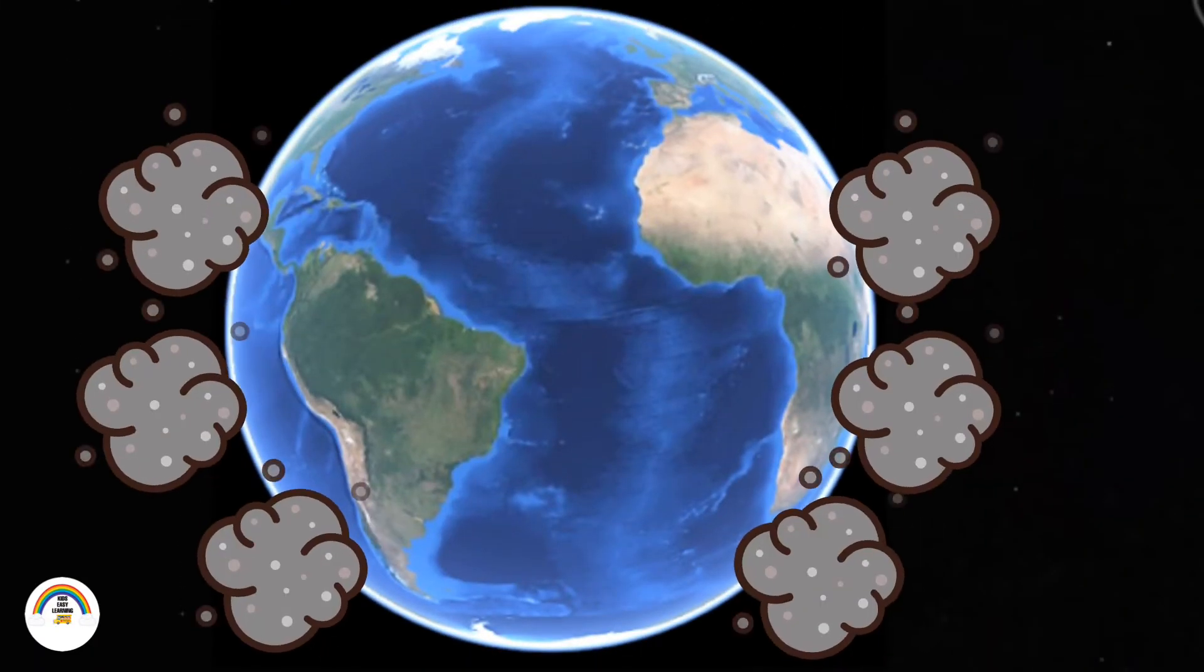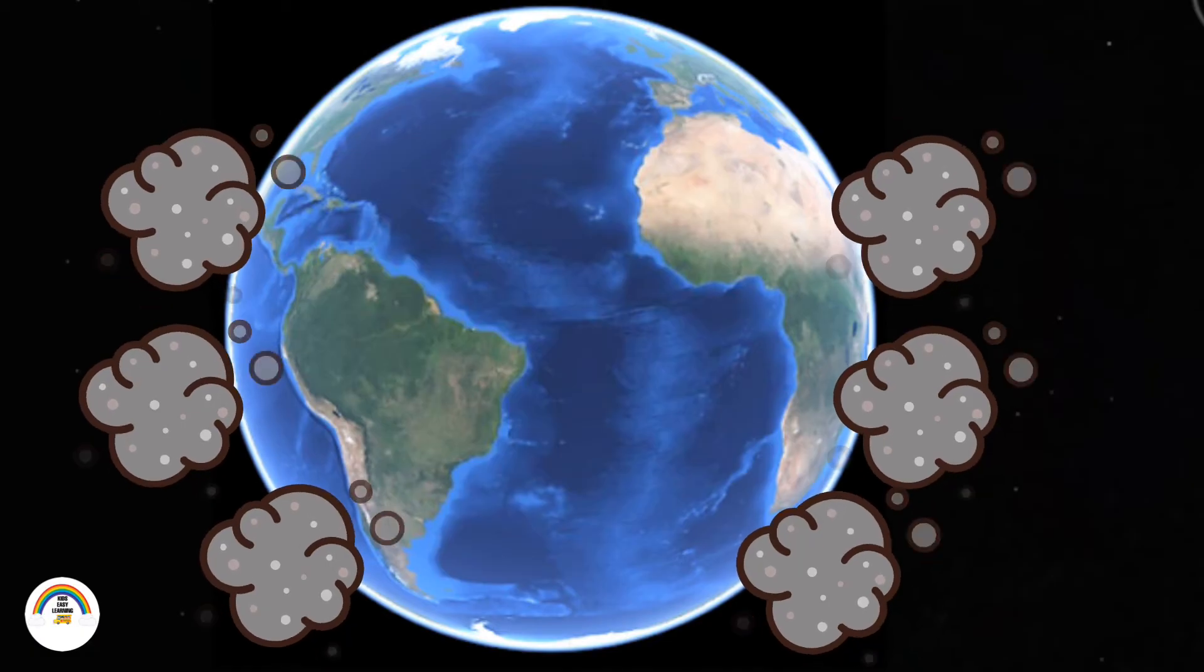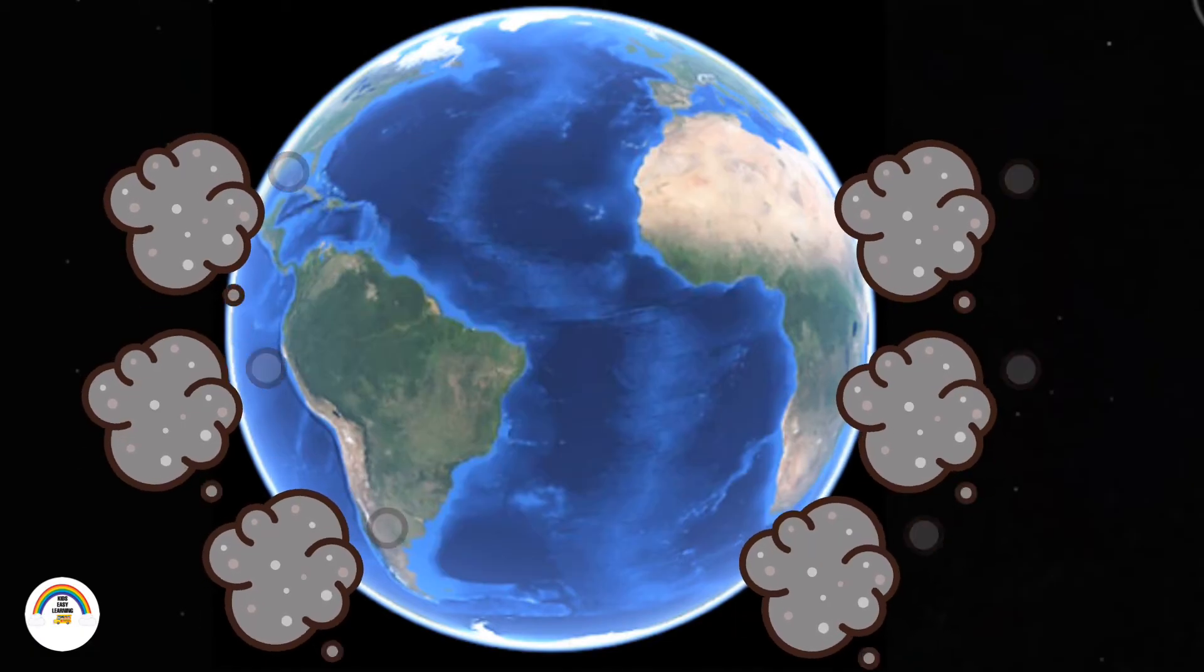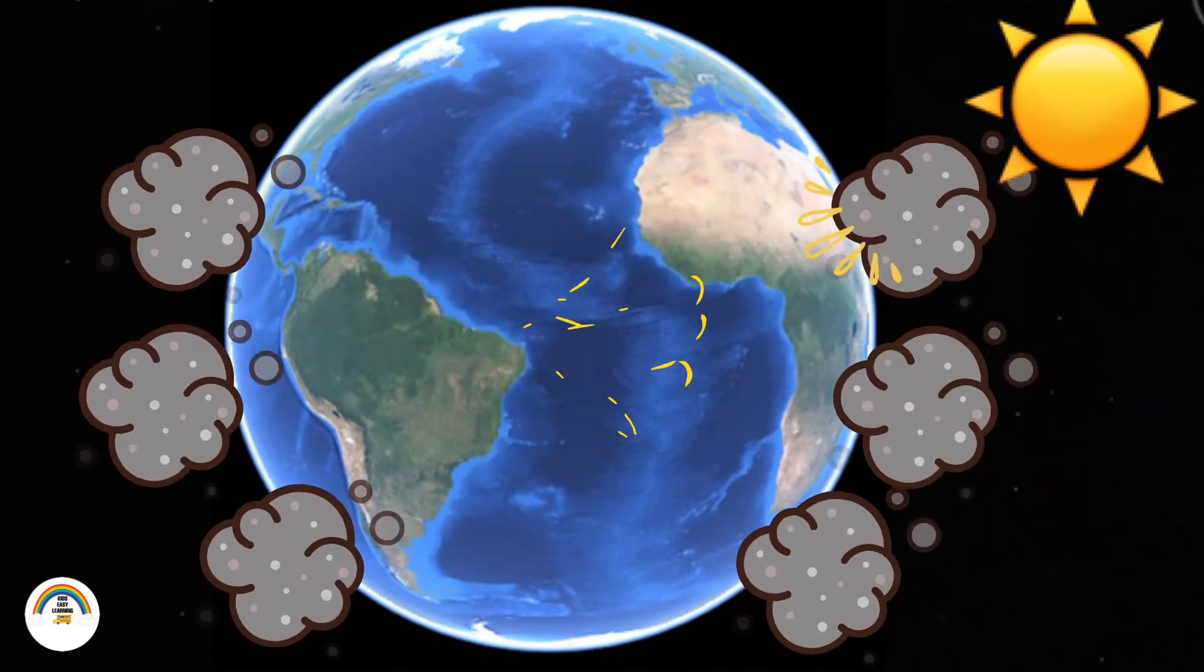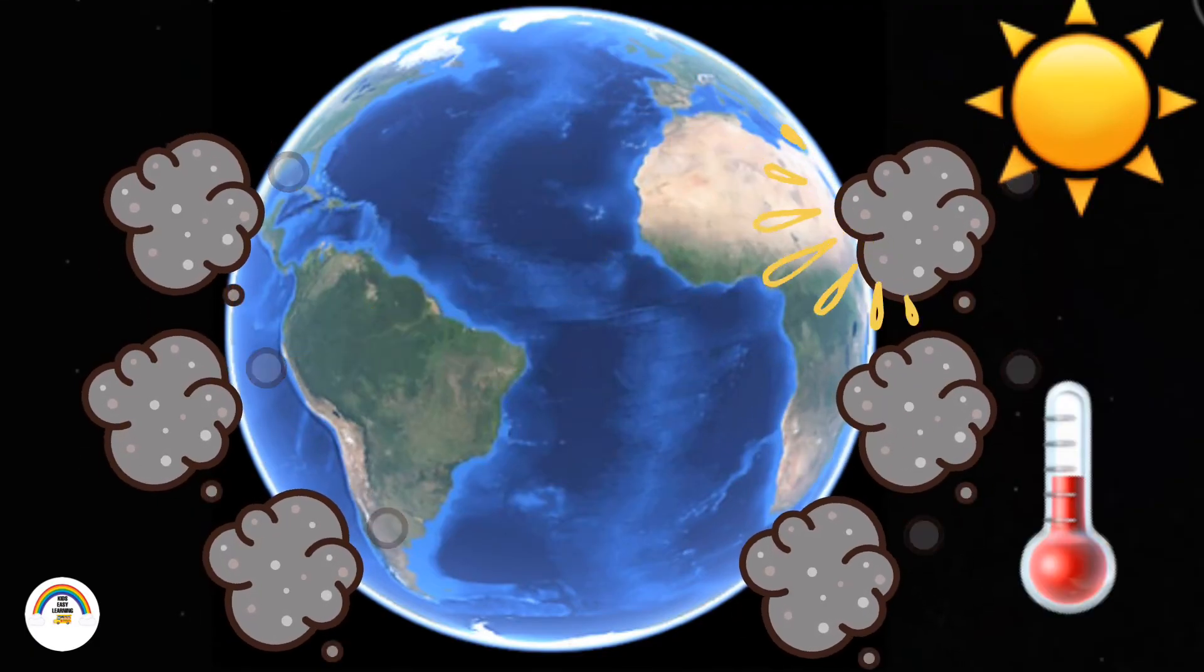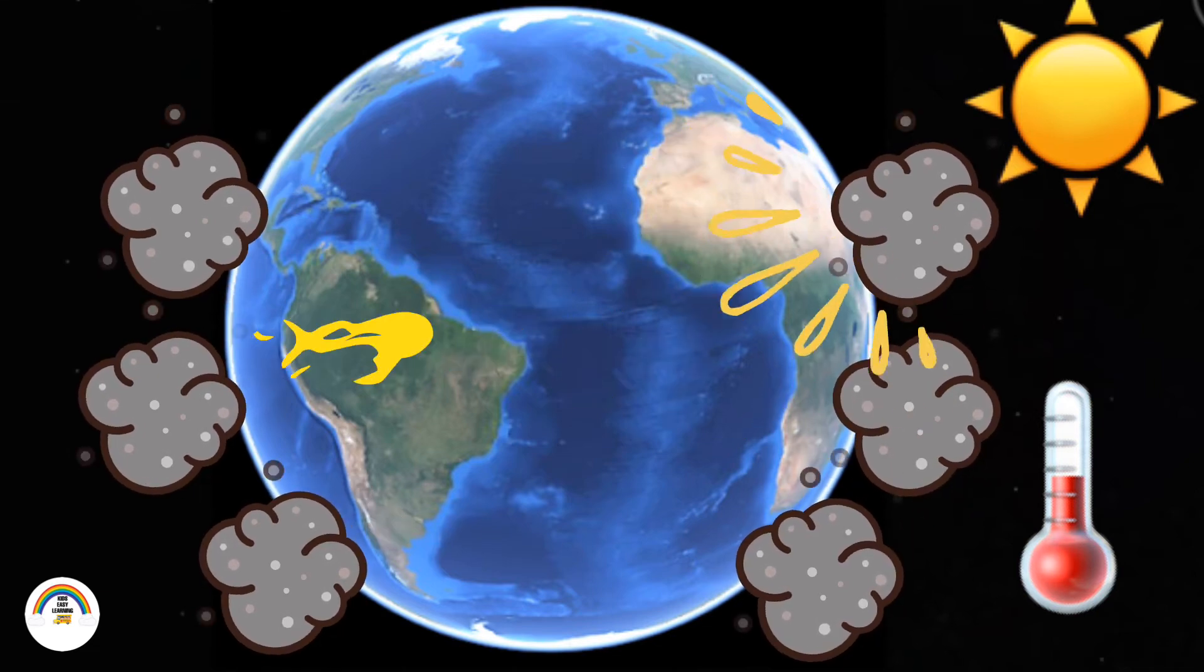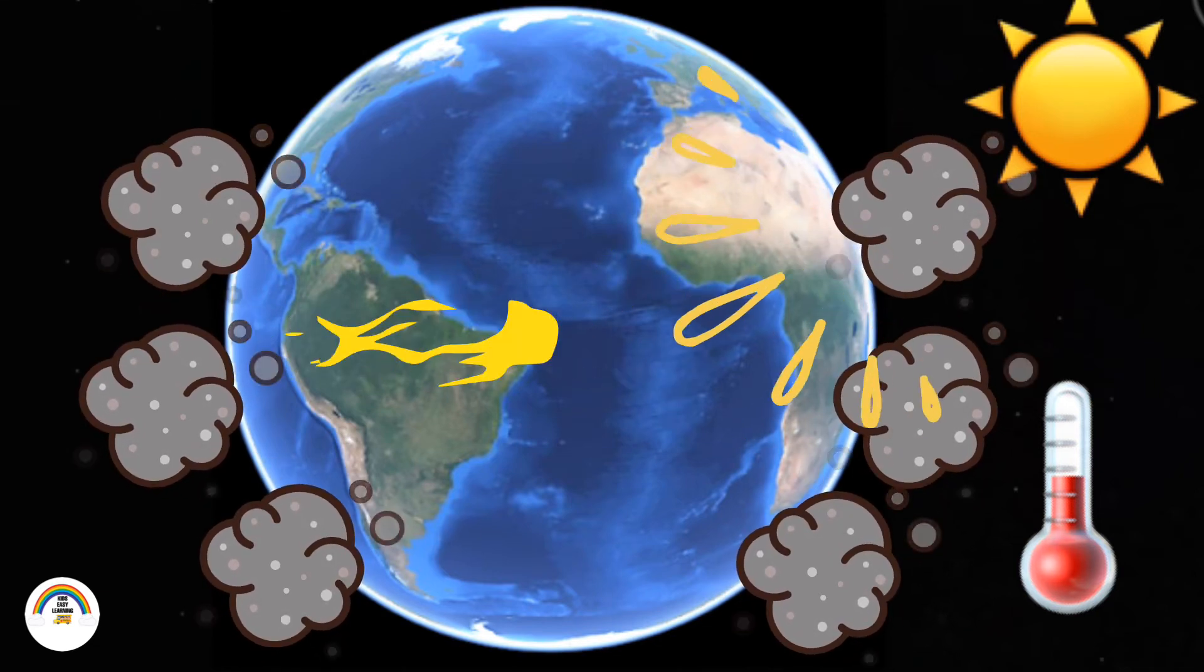Greenhouse gases like carbon dioxide, methane, and nitrous oxide form a blanket around the earth. This blanket traps heat from the sun, which results in a rise in temperature and climatic change known as global warming.